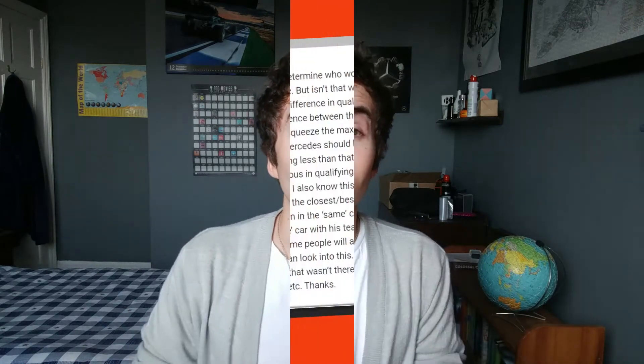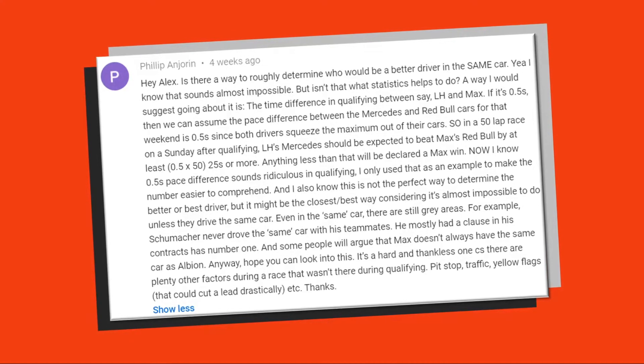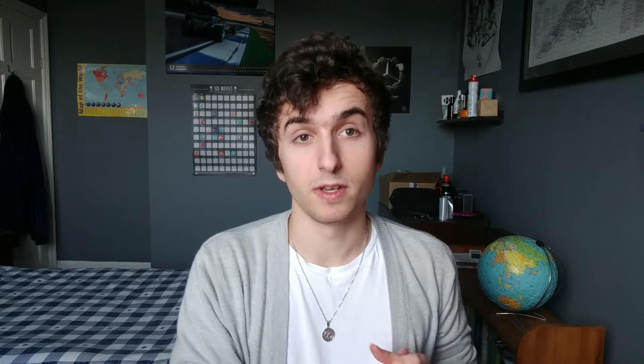This video is basically going to be a chronological look at how I went about creating version 7, as each version led on to each other. This story actually starts with a comment left by Philip, who has been the inspiration for a few of my statistical videos. He posed this question: is there any way to roughly determine who would be better in the same car? He suggested taking the qualifying differentials — say Verstappen was half a second behind Hamilton in qualifying; over a 50-lap race, we can assume Verstappen would be half a second slower, so there'd be a 25-second gap.